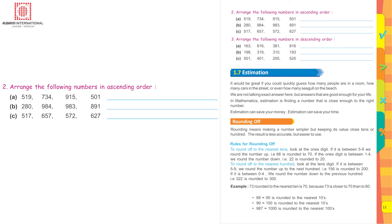519, 734, 915, 501. Look for hundreds first, look for the smallest 100. Here, yes, 500 is the smallest. 501 is the smallest, second is 519, then comes 734, then 915. This is how you are going to do it.